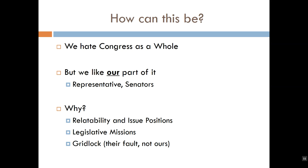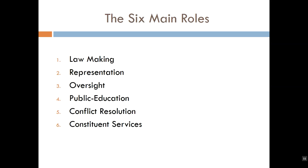I want to point out that while we tend to blame this on the people in Congress, it isn't altogether their fault. Certainly partisan bickering seems to be part of the equation, but the fact of the matter is that our framers intentionally created a legislative branch designed to create this kind of gridlock. We're going to talk about why a little later, but first let's move on to identifying the major roles of the legislative branch.